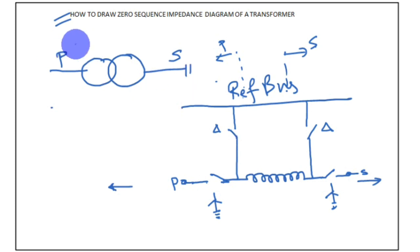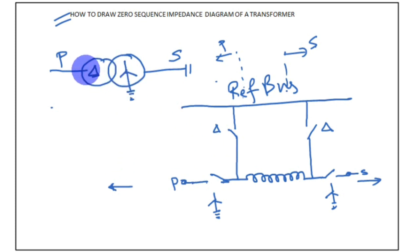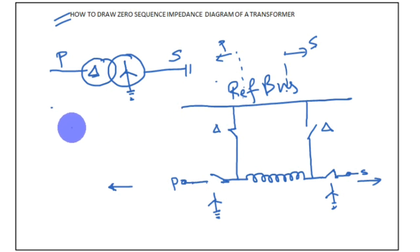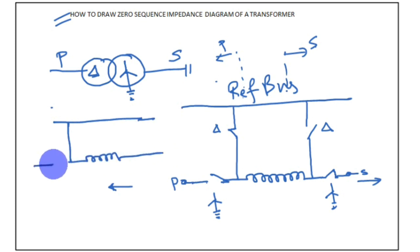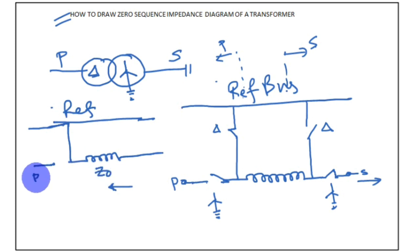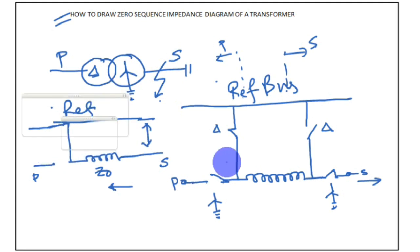For example, consider a delta-star transformer — delta on the primary and star with neutral grounded on the secondary — which is a very common transformer used in industry. The primary side is delta, so we close the primary switch. The secondary neutral is grounded, so that switch also closes. The resulting zero sequence diagram shows a continuous path on the primary side but an opening on the secondary side, meaning zero sequence current will not pass to the primary side when an earth fault occurs at the secondary.